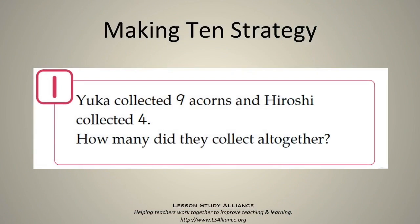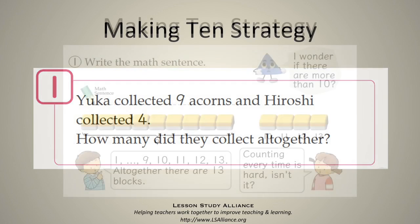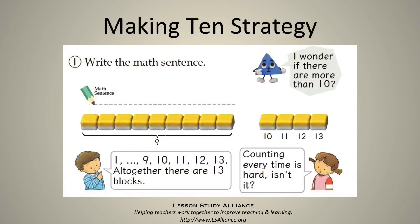For example, beginning with a concrete situation — Yuka, a Japanese kid's name, collected nine acorns and Hiroshi collected four. How many did they collect? Of course, you can count on: nine, ten, eleven, thirteen, fourteen. But it's tedious. Counting every time is hard. Can you do it without counting? By using prior knowledge — which is problem solving. Some students might say 'I need one more to make nine to ten, so the four is one and three. I'll give one to nine so it becomes ten, so it's going to be thirteen.' You don't have to count one by one.